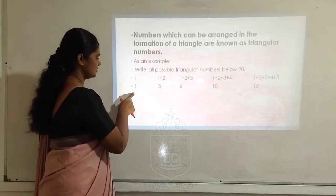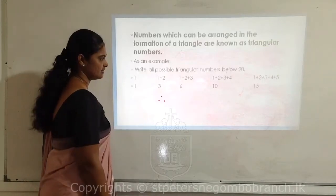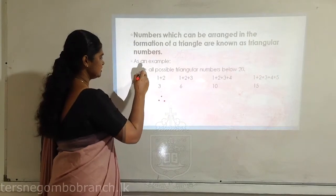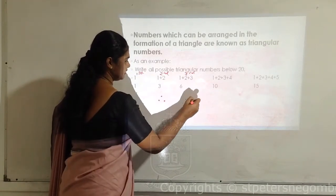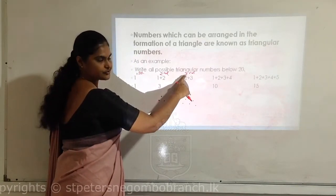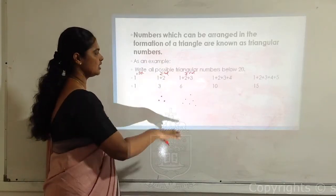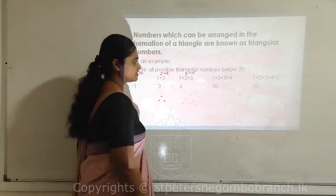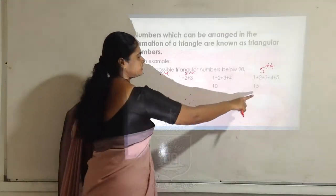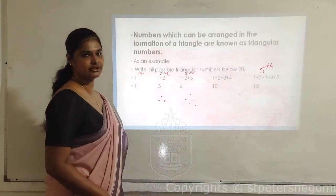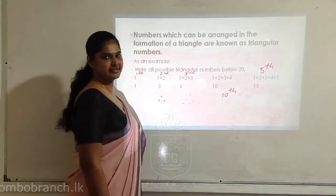The first triangular number has bottom line 1, so it's 1. The second has bottom line 2: 2+1=3. The third has bottom line 3: 3+2+1=6. The fifth triangular number is 5+4+3+2+1=15. Can you see the pattern? When asked for the tenth triangular number: 10+9+8+7+6+5+4+3+2+1=55. So the tenth triangular number is 55.